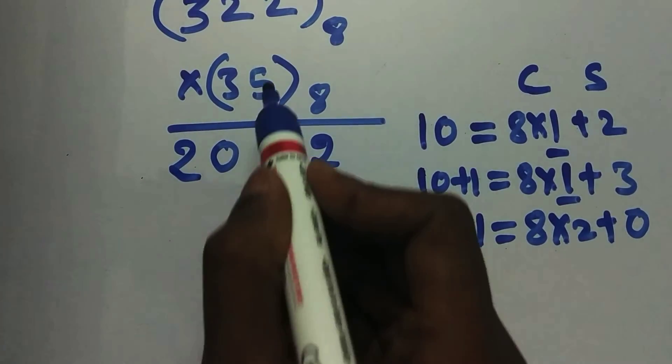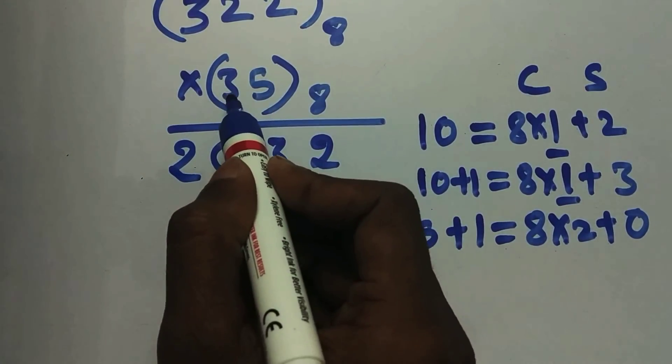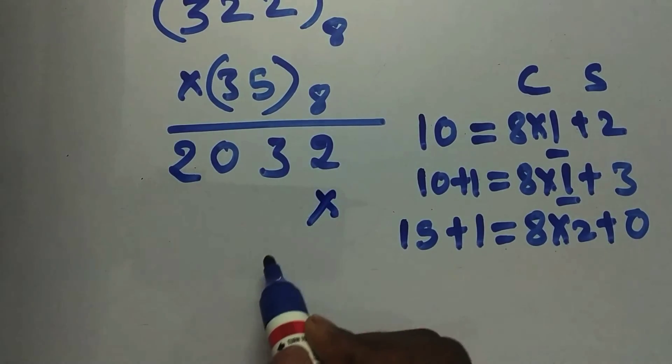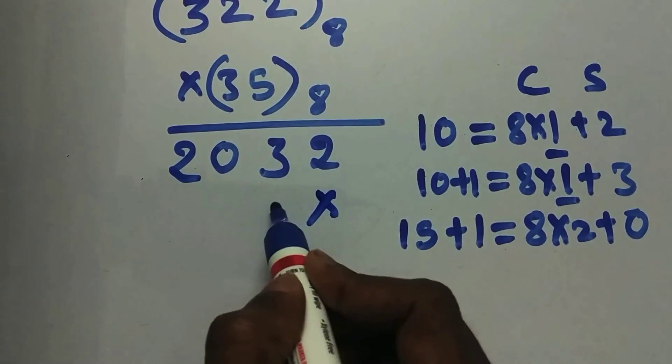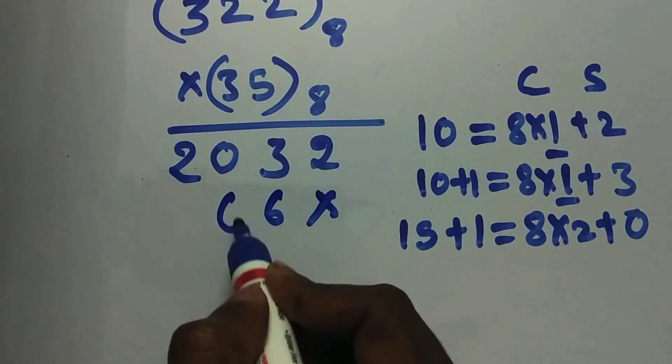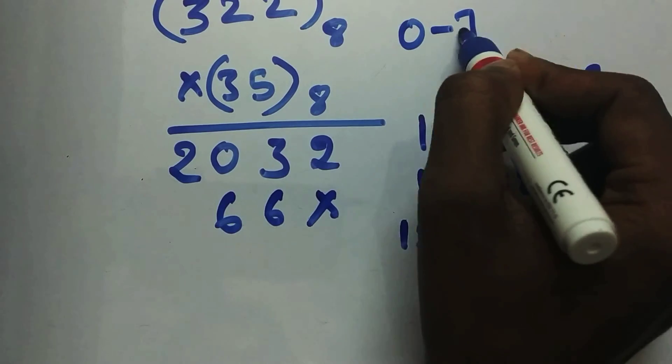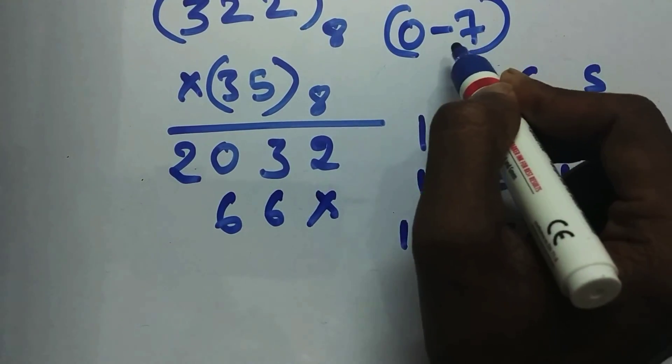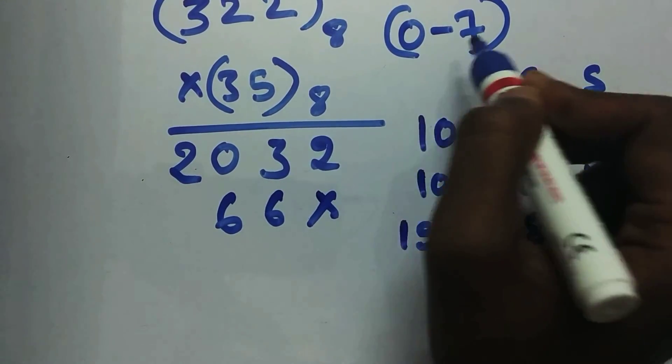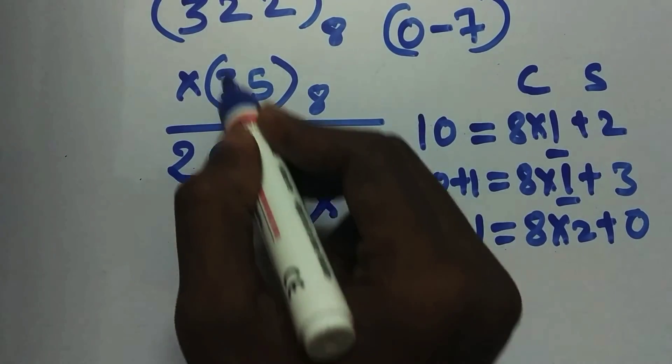Now we need to multiply it by 3. So since it's the 10th place, it will be 0 over here. So 3 into 2, it's 6. 3 into 2, it's 6. We are writing it directly because we can represent 0 to 7 in octal, not more than 0 to 7. Don't forget that.